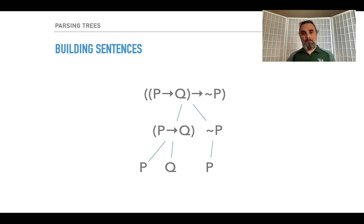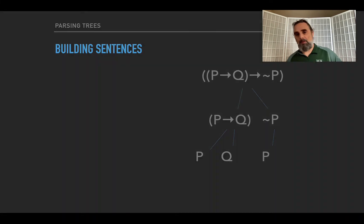And it shows how the sentence, how the thing at the top was built up from its pieces. We took the P and the Q, put them together, took the P, put a negation on it, and then took those and stuck them together. So when we're building a sentence, we can, instead of writing it all out, we can just draw it out in a tree where it all comes together at the top. An upside down tree, but that's fine.